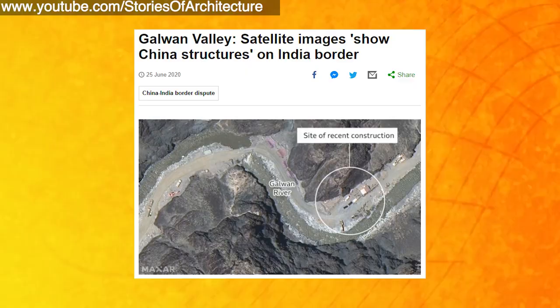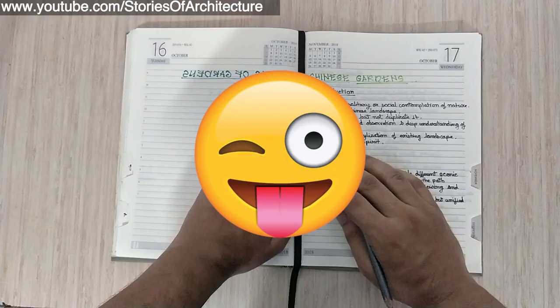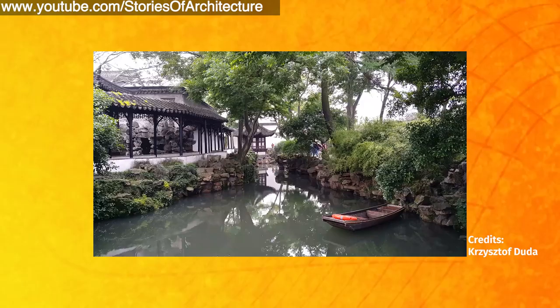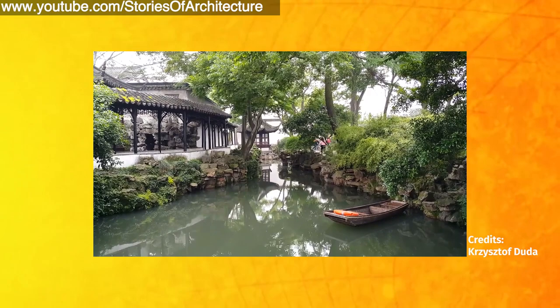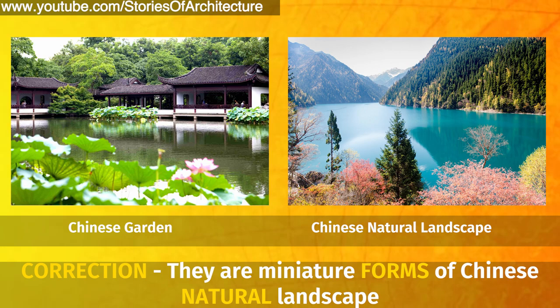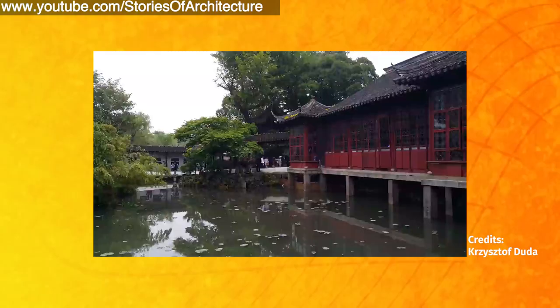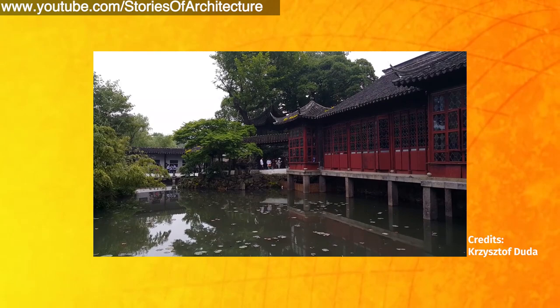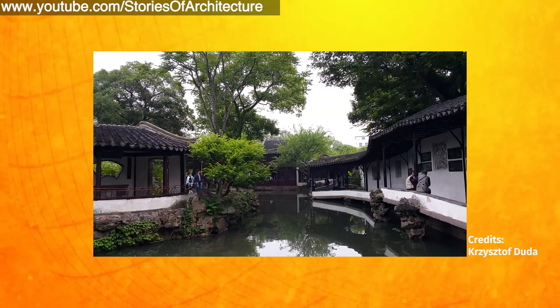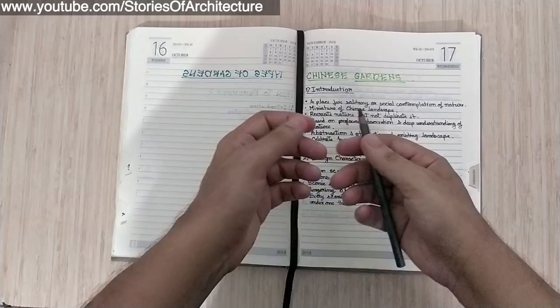The first type of garden we are going to talk about is Chinese gardens. Chinese gardens are a place for solitary or social contemplation of nature. They are a miniature of the Chinese landscape spread all across China. The Chinese garden style tries to recreate nature but not duplicate it. They are based on profound observation and deep understanding of nature, and abstraction and stylization of the existing landscape.